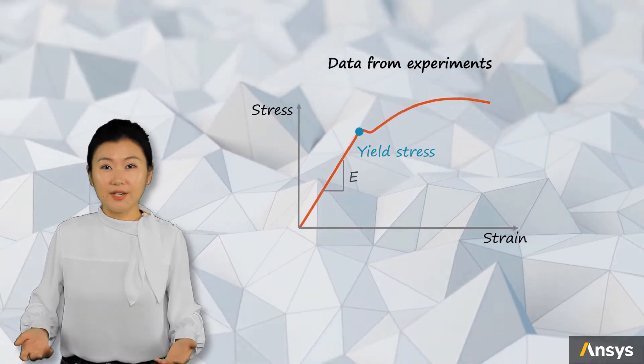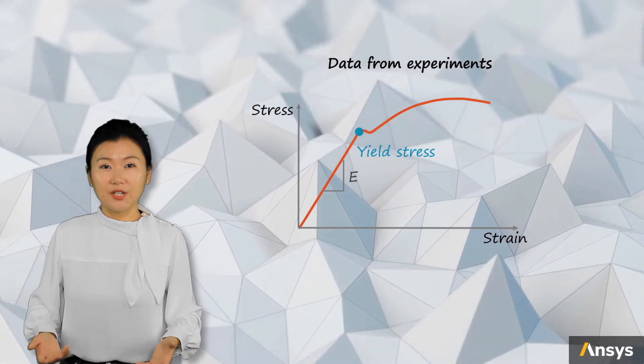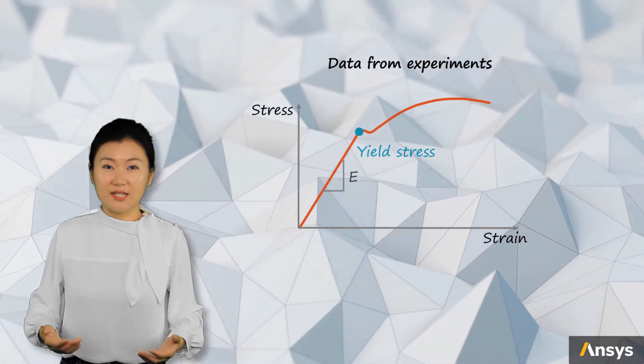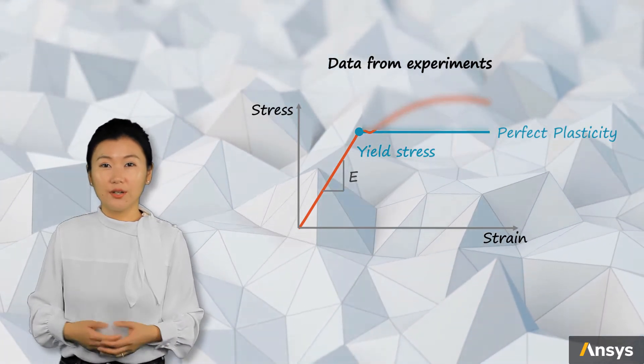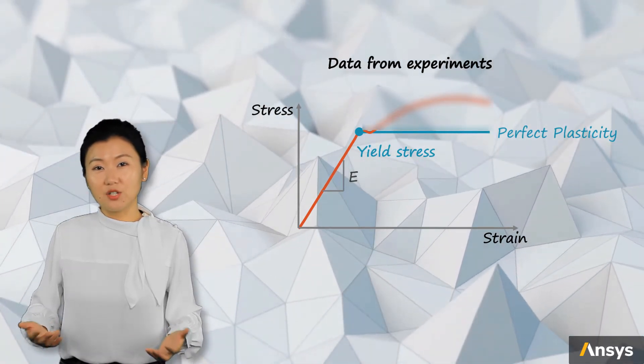Next, we will decide if perfect plasticity or hardening should be used. Using perfect plasticity means that the strength after yield point is ignored. Therefore, it will lead to more conservative results.